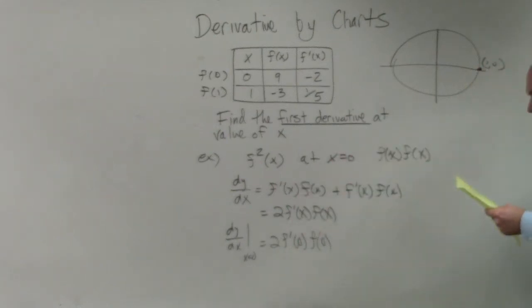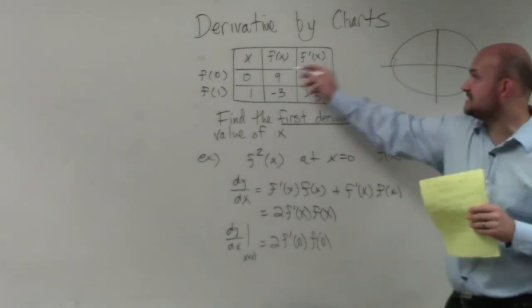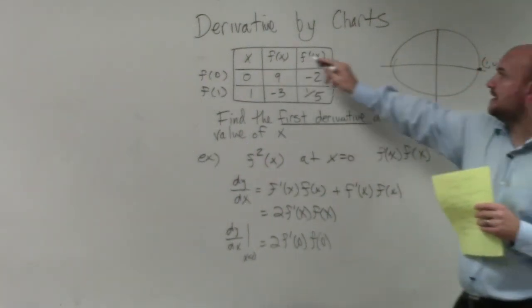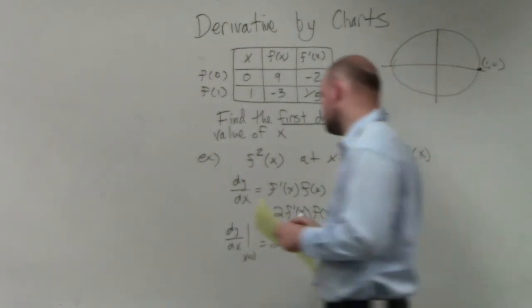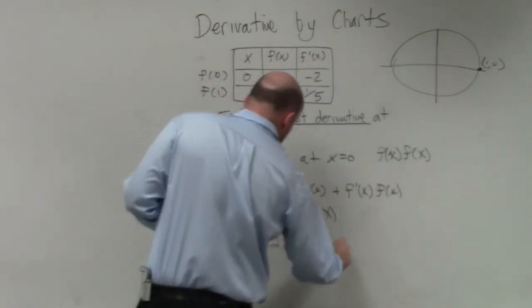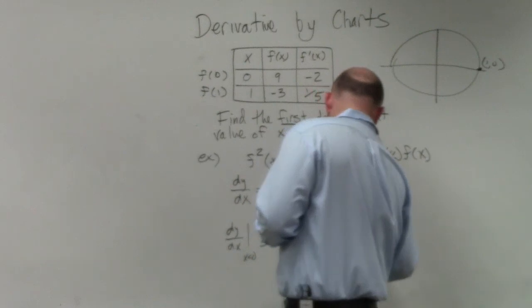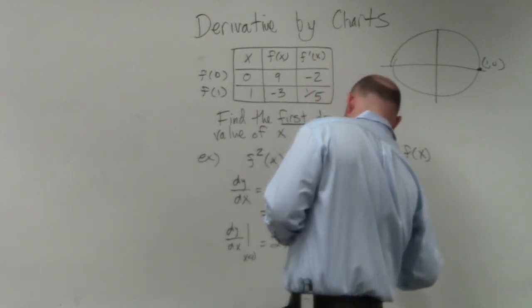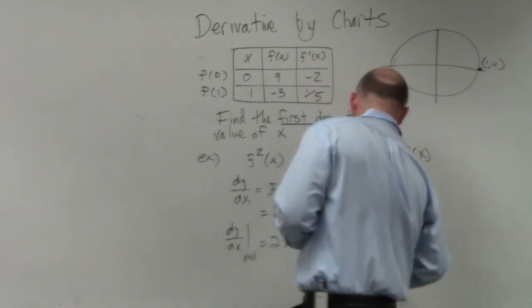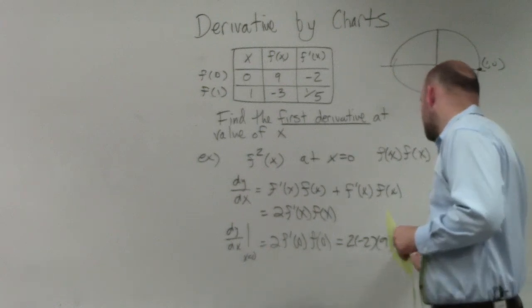So now again, we just go back and look at our values. So the function f prime at 0 is going to be negative 2. f of 0 is going to be 9. So let's just write that. 2 times negative 2 times 9, which equals negative 36.